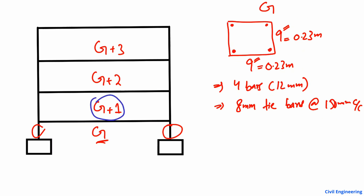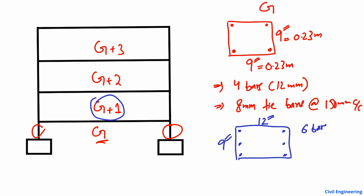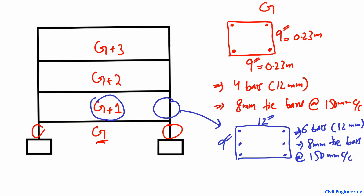For the first story (ground plus one) of a three-story residential building, the recommended minimum column size is 9 inches by 12 inches. The column should have at least six bars of 12 millimeter diameter. The tie bar remains 8 millimeter at a 150 millimeter center-to-center spacing. This is the recommended minimum cross-section for the first floor.